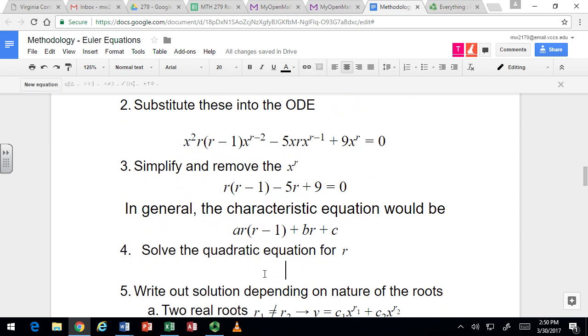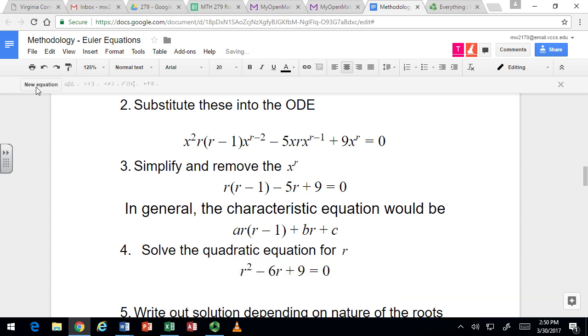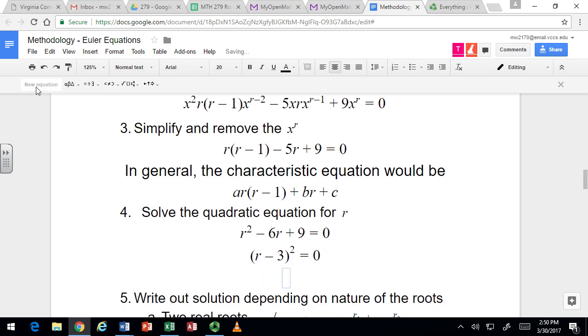Alright, let's try to solve this for r. It might still factor. So here it would be r squared, let's see, minus r minus 5r minus 6r plus 9. Yeah, so it's actually r minus 3 squared. So you only get one solution. It's a repeated root.